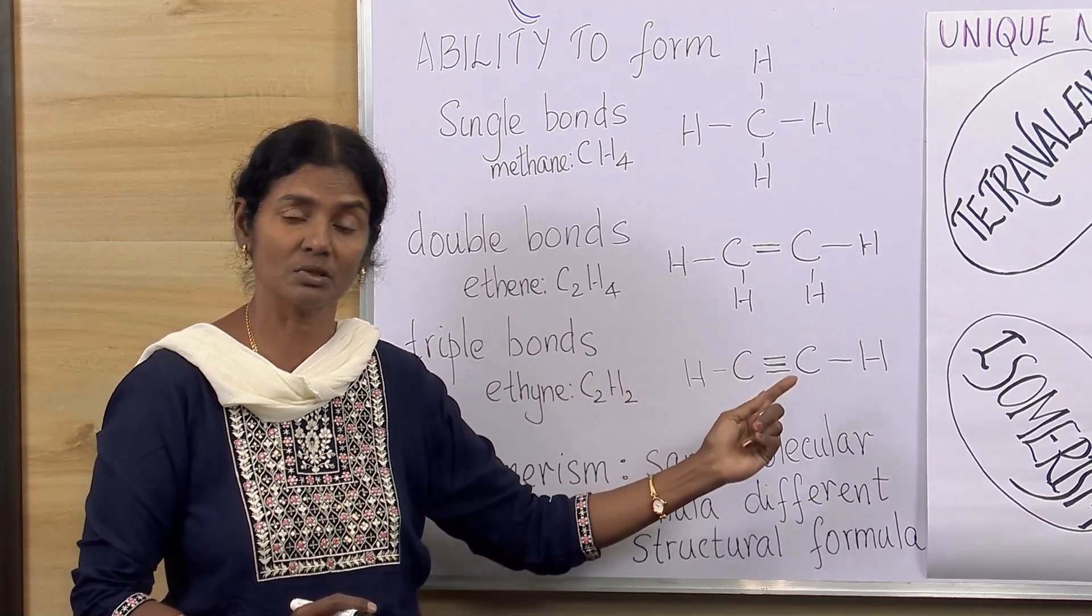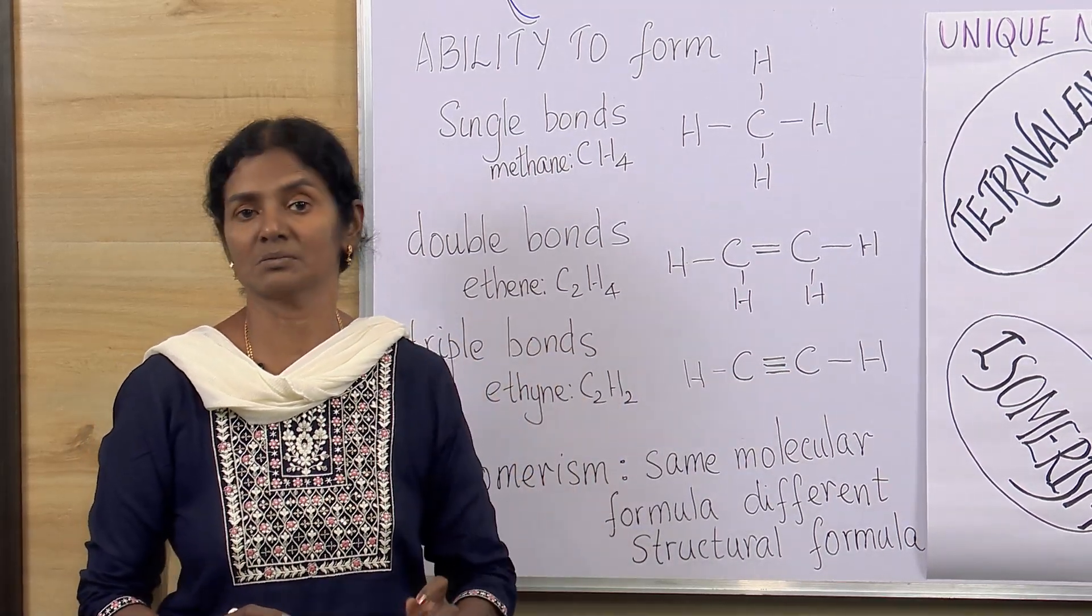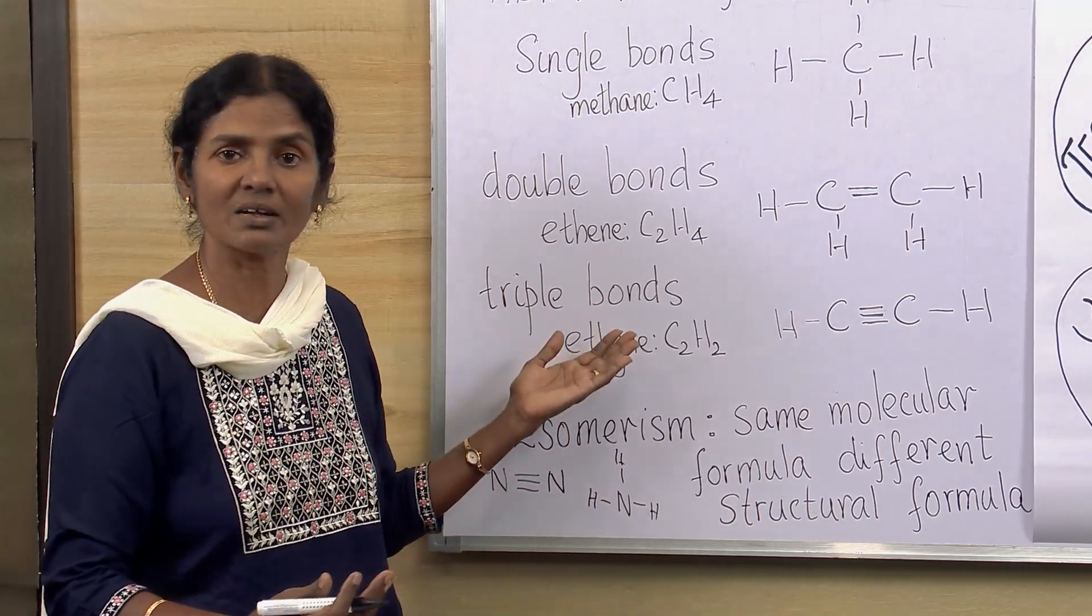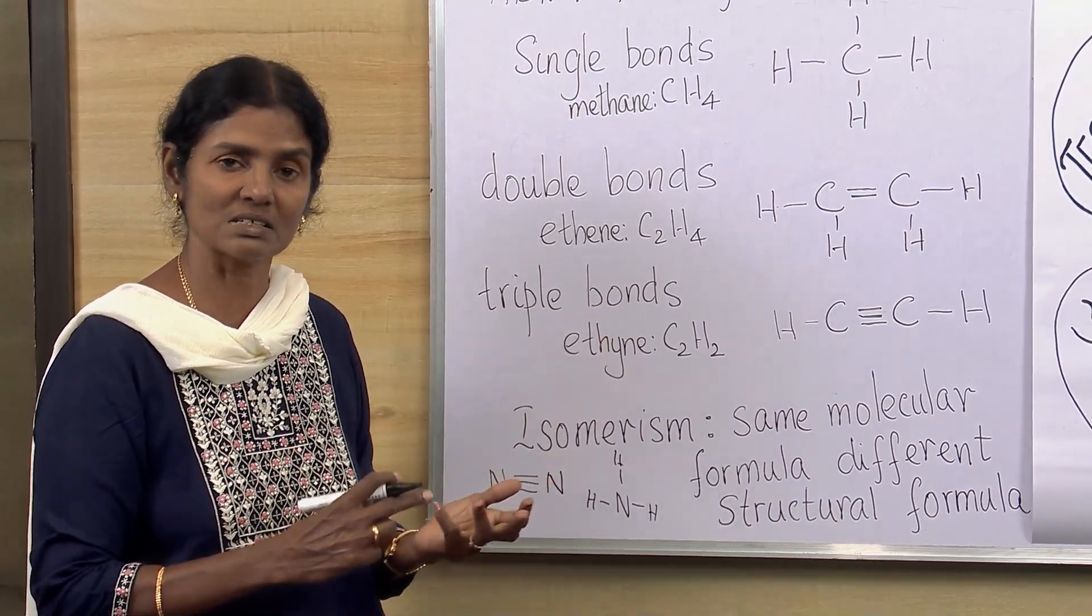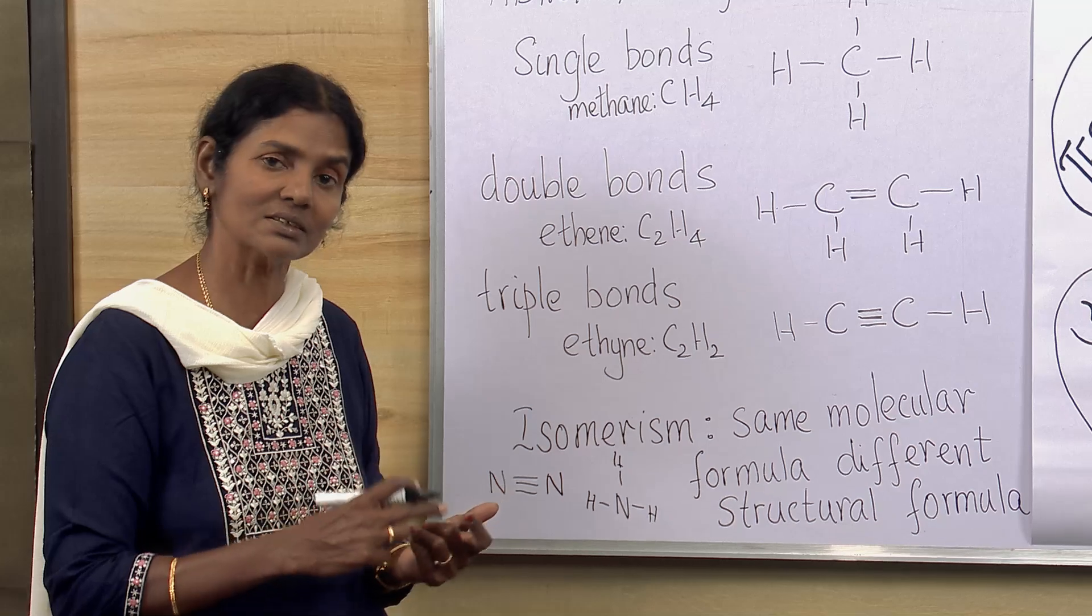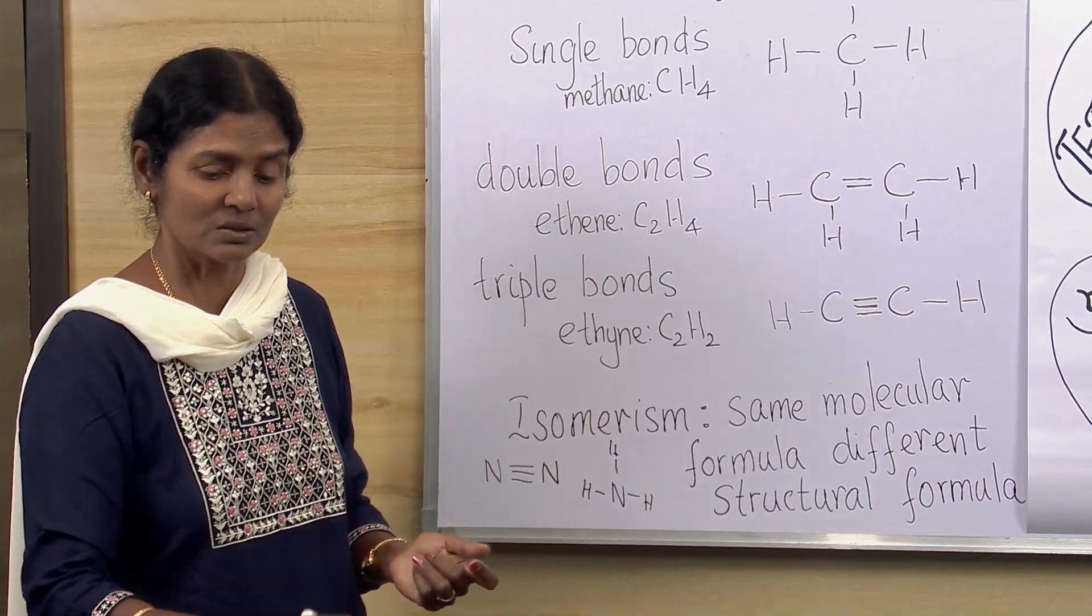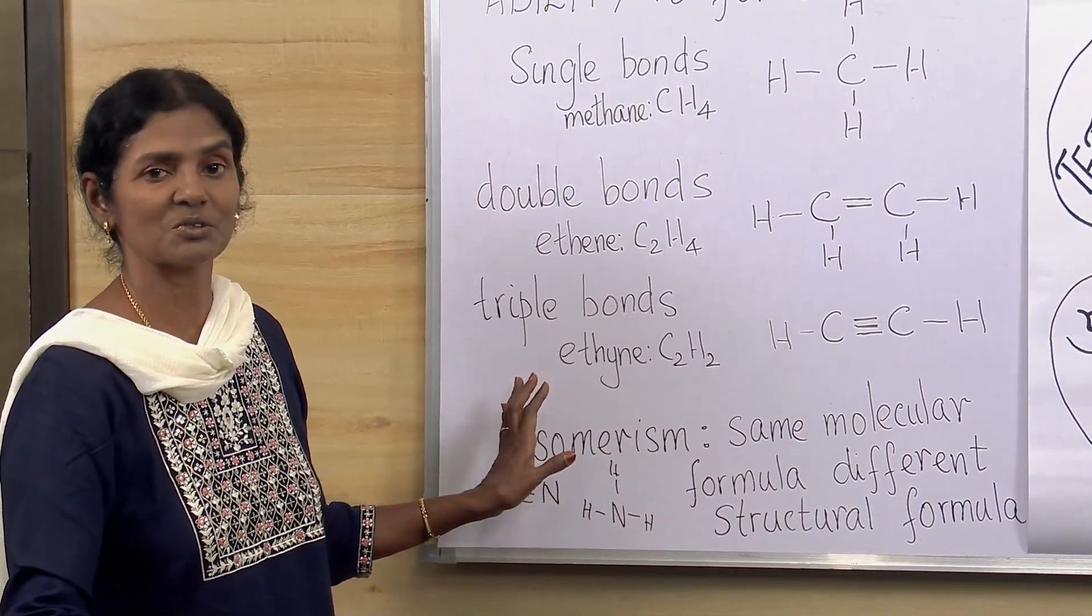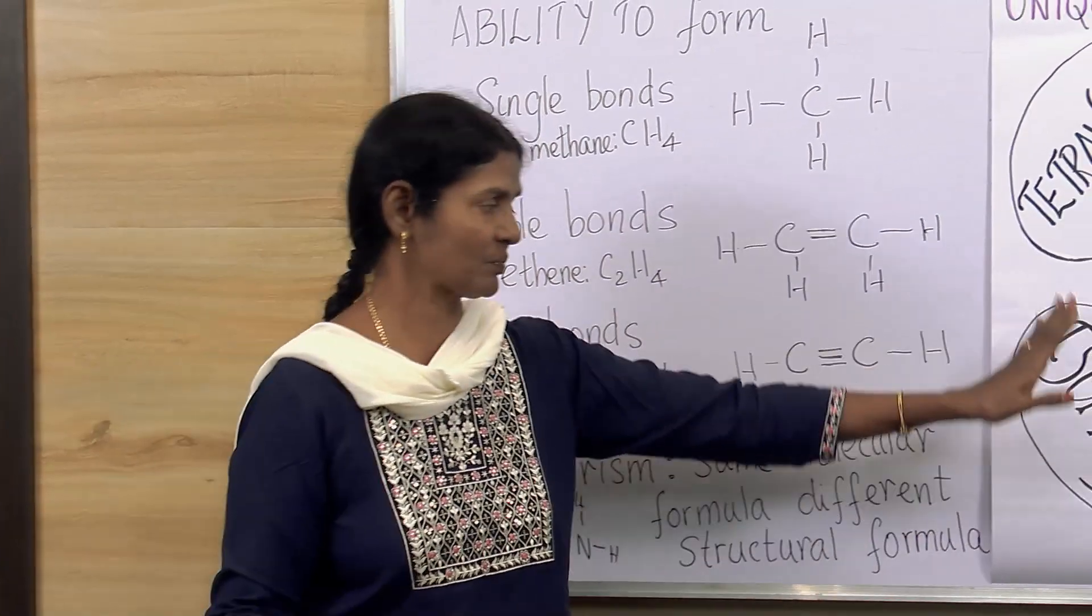Three things are possible by the same element. But carbon is one element which can form a single, double and a triple bond. This makes this carbon atom unique. So these are the properties.